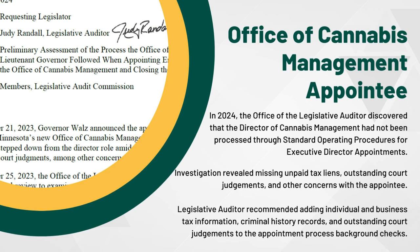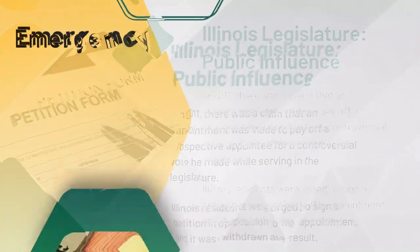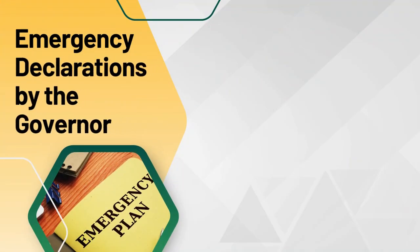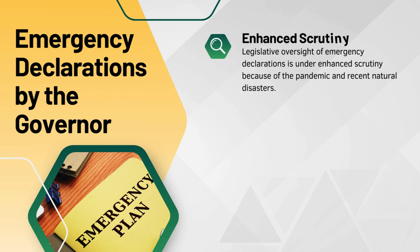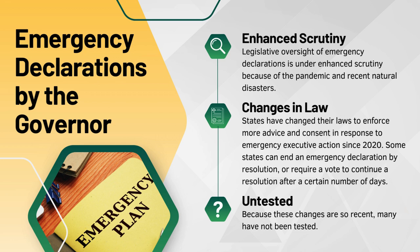Illinois' legislature has used public input to influence gubernatorial appointments. In 2011, following a claim that an appointment was a payoff for a controversial vote made by the prospective appointee while serving in the legislature, Illinois residents were urged to sign a petition in opposition, and the appointment was withdrawn. Governors can declare emergencies in certain situations. Across the country, legislative oversight of emergency declarations is under enhanced scrutiny because of the pandemic and recent natural disasters. Plenty of states have changed their laws to enforce more advice and consent in response to emergency executive action since 2020. Some state legislatures can end an emergency declaration by resolution, and others require a vote to continue the emergency declaration after a certain number of days.